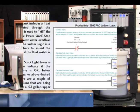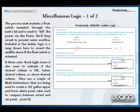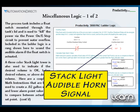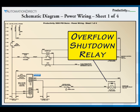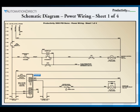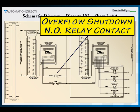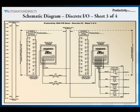We can program our signal from the high level alarm float switch relay to give us both an indication on the Seymour touch panel that there is a problem and also sound the audible alarm horn on our stack light. Referring back to our schematic diagrams, the float switch is wired so the overflow shutdown relay is normally energized if conditions are OK, and a normally open contact is wired into the master control power circuit to allow it to be energized. Another normally open contact from the overflow shutdown relay is wired to input 2 on our P3-08ND3S DC input module, which allows us to monitor the status of the overflow shutdown circuit.